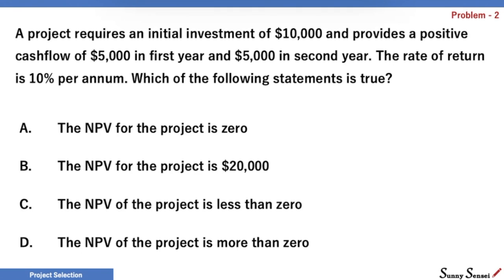Alright, let's try to find the correct choice. There is an investment of $10,000 at the start of the project. This means that at time 0, we have net cash flow of minus $10,000. It is at time 0, so the present value will also be minus $10,000.